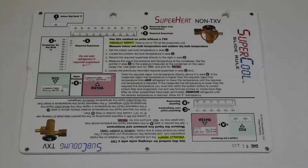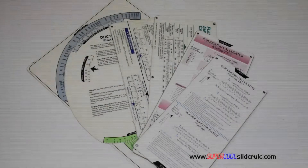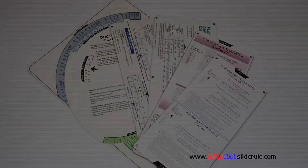Hello, I'd like to take a minute to introduce you to the coolest tool in the HVAC industry. Historically, technicians have carried four or five different slide rules — one for R22, one for R410A, one for metal duct sizing, one for flexible duct sizing, and yet others for diagnostics or troubleshooting.